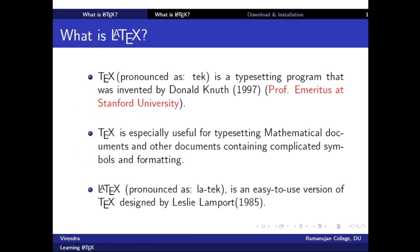TeX is a typesetting program that was invented by Donald Knuth in 1978. TeX is specifically useful for typesetting mathematical documents and other documents containing complicated symbols and formatting. But it was not so easy to use TeX, so it was further simplified by Lamport in 1985 and it was named LaTeX. So now TeX is known as LaTeX — it is an easy-to-use version of TeX.